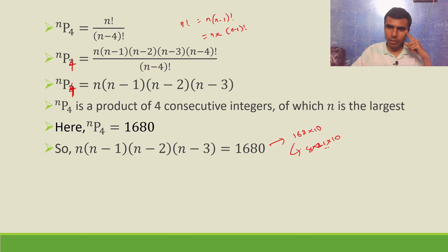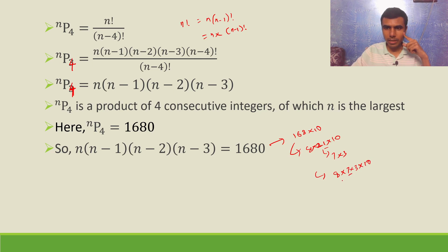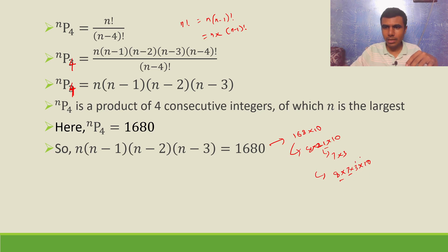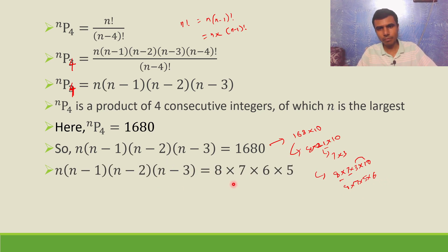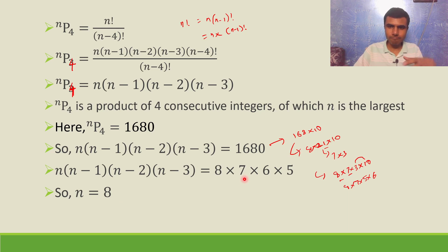Now 21 I can write as 7 into 3, so I'm getting 8 into 7 into 3 into 10. I have 7 and 8 already. Now 3 into 10 is 30, and 30 I can write as 5 into 6. So ultimately I can write 1680 as 8 into 7 into 6 into 5. This is a product of four consecutive integers, so n equals 8.